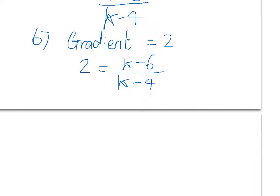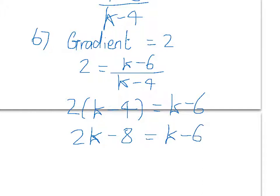A bit of algebra here to find out what k is. We want to move this divided by k minus 4 first. We're going to do the opposite, which is a multiply. So, 2 times k minus 4 is equal to k minus 6. You need to expand this bracket. So, 2k minus 8 is equal to k minus 6.